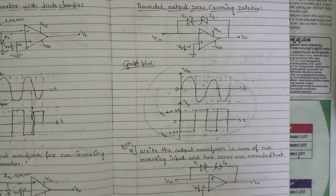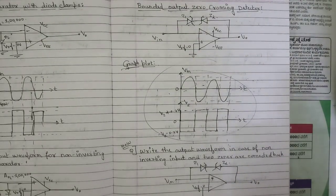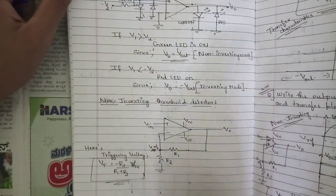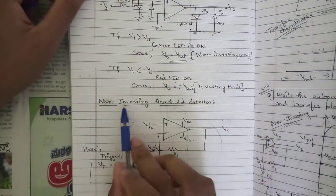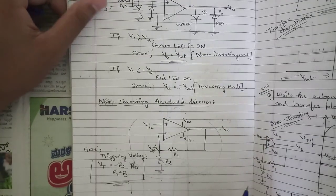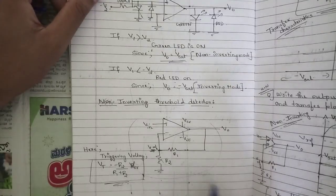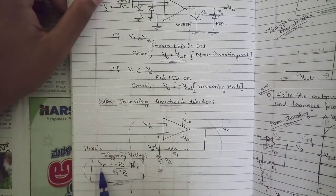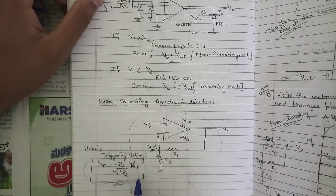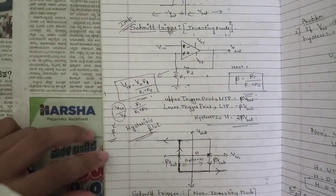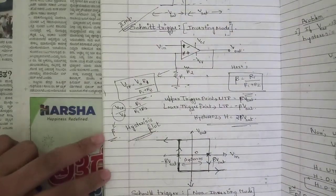The square wave generated by a zero-reference comparator is an important diagram to note. For comparators with non-zero reference (the inverting threshold detector), the triggering voltage VT = −(R2 / (R1 + R2)) × VEE. Please note this expression down.